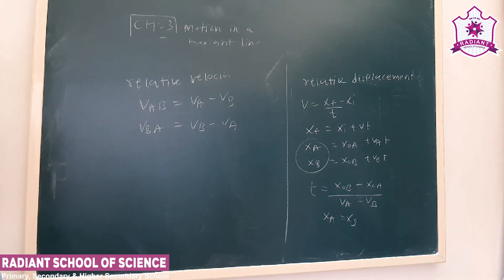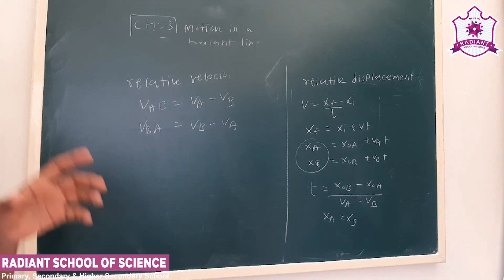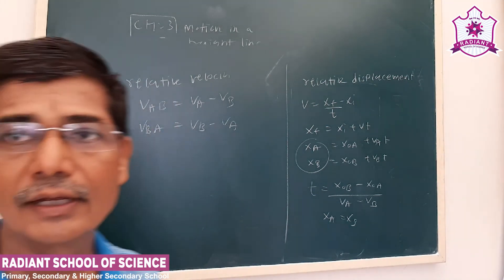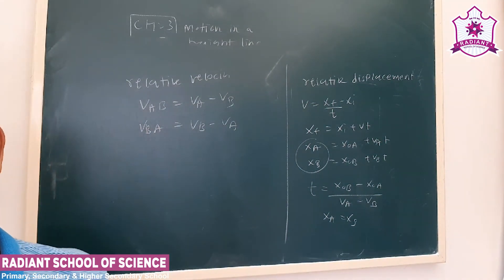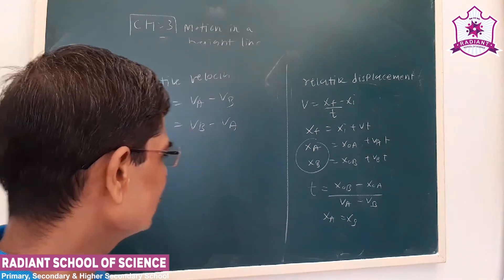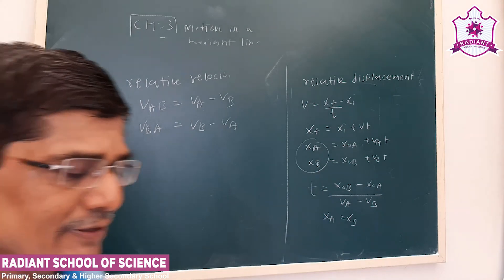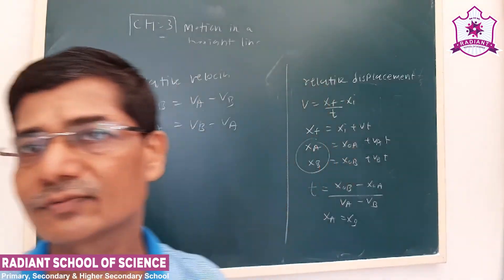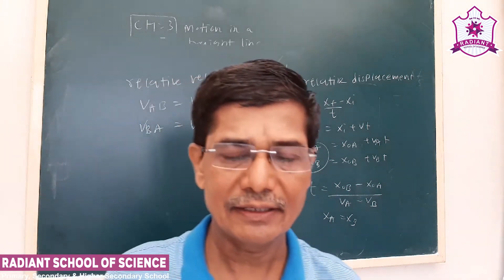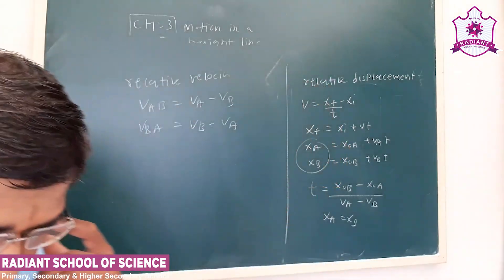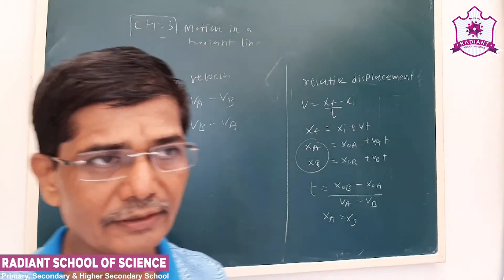We also saw some questions based on graphs, using the property that the area of the velocity-time graph gives distance or displacement. So this is all about lesson number 3, motion in a straight line. This is a very important lesson — it is the first kinematics lesson and will be useful in a number of subsequent lessons. Thank you.